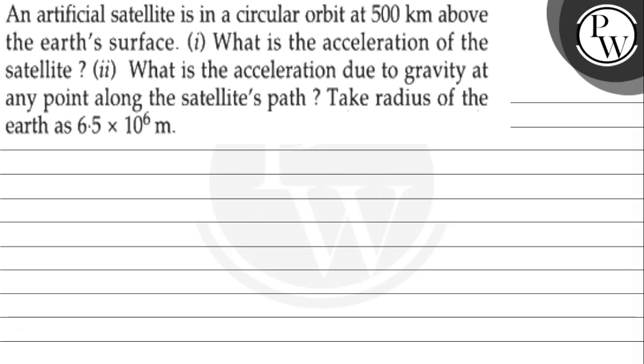Hello, children. Let's see the following question. An artificial satellite is in a circular orbit at 500 km above the Earth's surface.